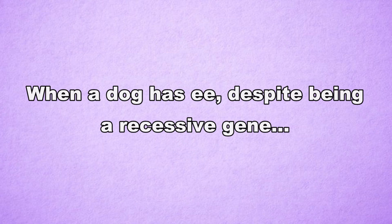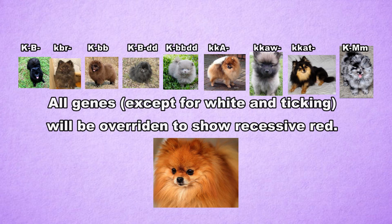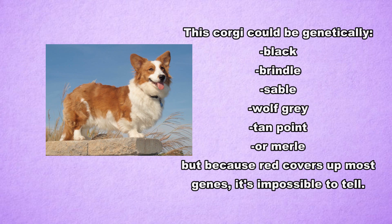Although recessive red is recessive in its locus, it dominates over all the other loci except for white and ticking. Dominant black, sable, wolf grey, tan points, recessive black, merle, and brindle will all be turned red. It's impossible to know just by looking at a recessive red dog whether it carries sable, tan points, brindle, or any of the A or K loci, making it hard to know what it will pass down to its puppies.